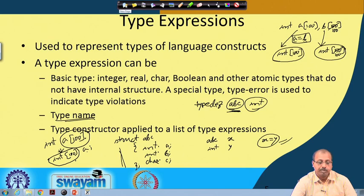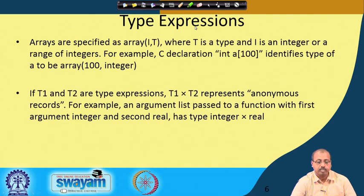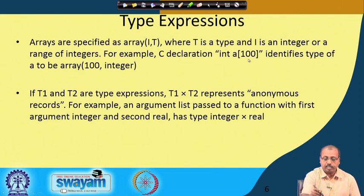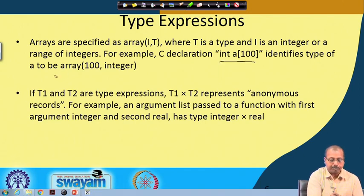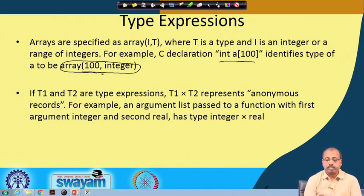Arrays are specified as array(i, t) where t is the type and i is an integer or a range of integers. So 'integer a[100]' means the type of a is array(100, integer) — it is written like this: the constructor 'array' takes 100 such integers together to give this type.